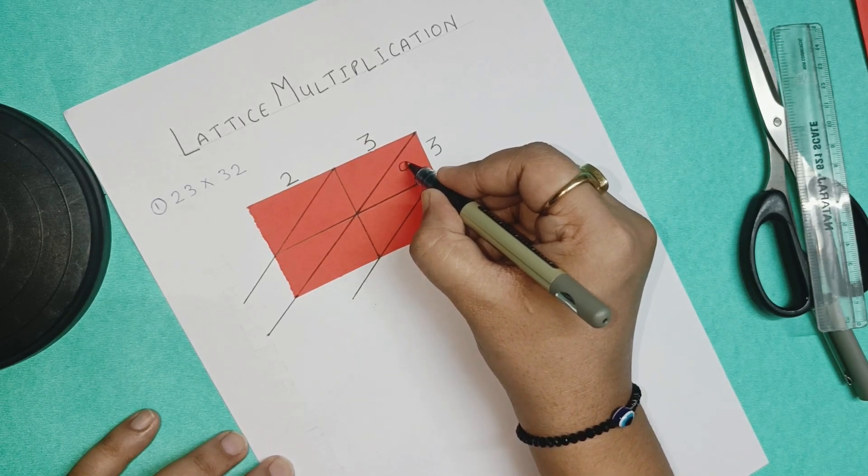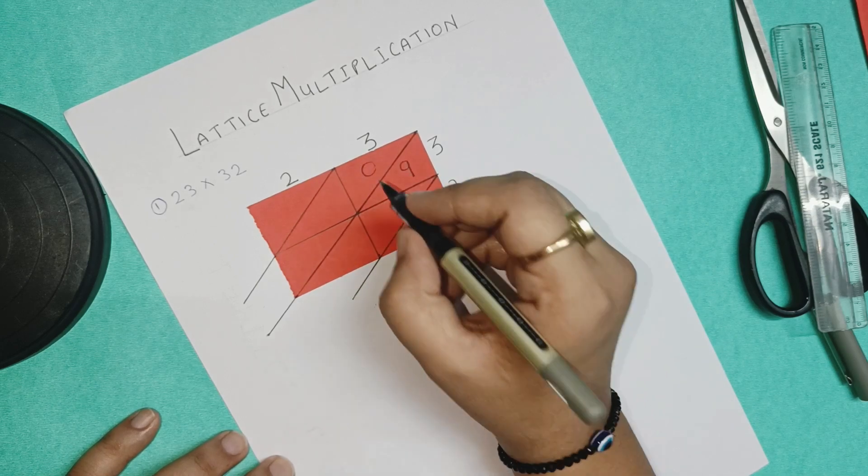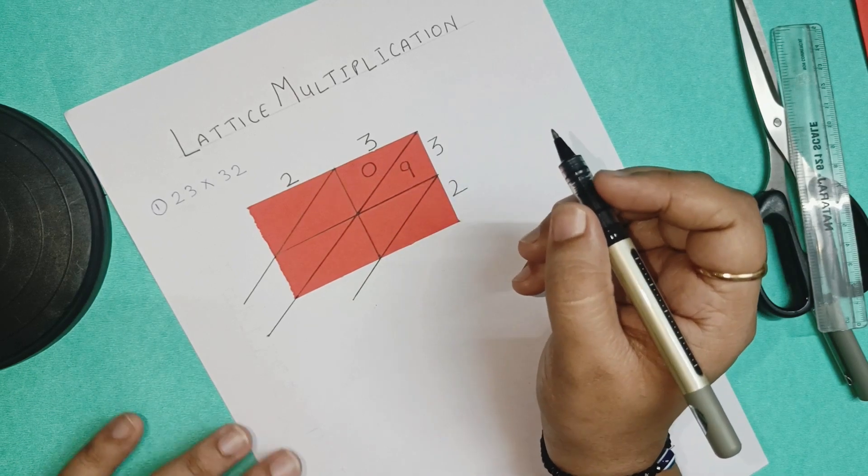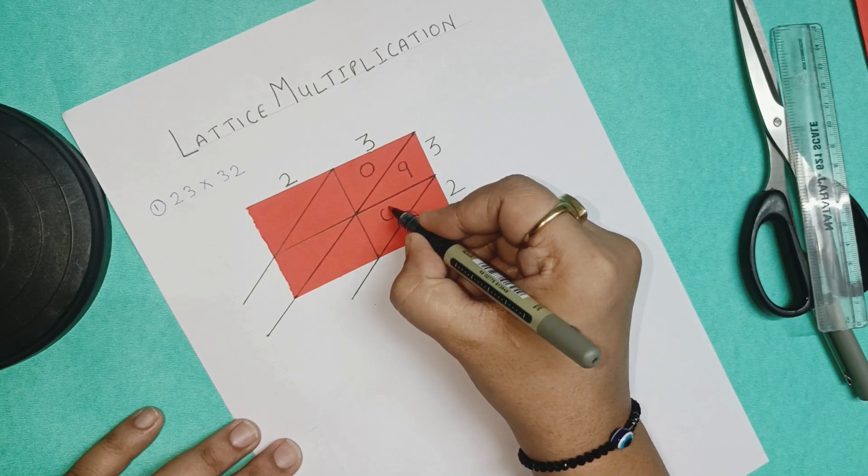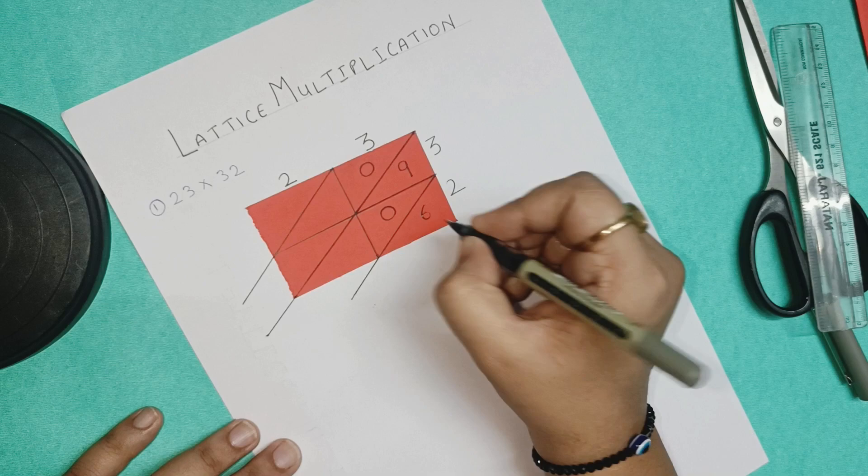3 into 3 is 9. And we have to write a 2 digit number, so I am writing 0 over here. If we had a 2 digit number, we would write the 2 digit number in a particular manner. So 3 into 2 is 6, so again it's 0 6.